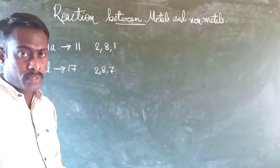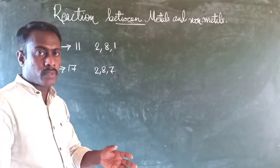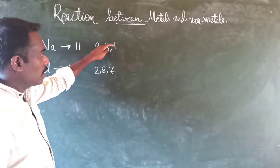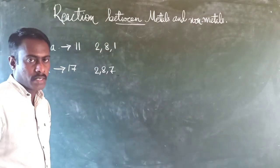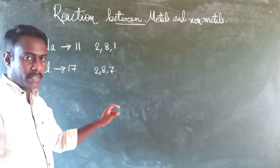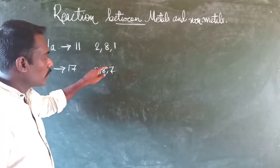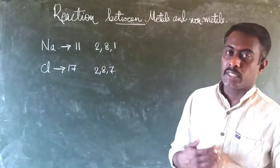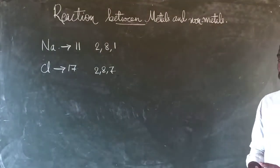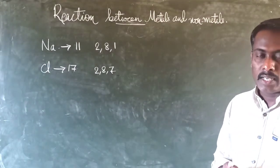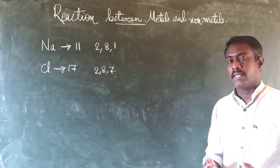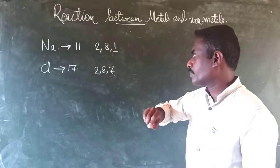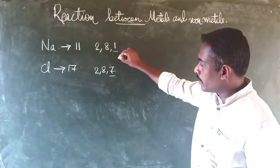The outermost shell of an atom is the last orbit. Since both of these elements do not have a stable configuration, both will try to attain a stable configuration. That is why atoms of the elements react with the atoms of other elements or compounds — they are trying to get a stable configuration. The condition for stable configuration is having 8 electrons in the outermost shell.